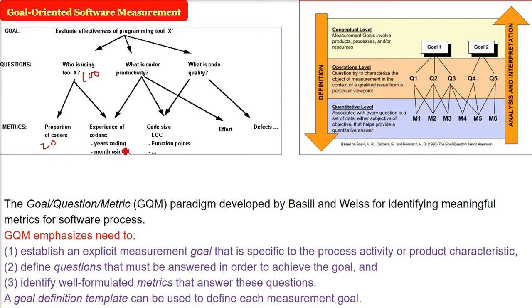Now, experience of the coders. Some of them may have five years of experience, some may have three years of experience. And the people who are not coding also can have experience. This is the metric: metric is coming from proportion of coders, the experience of coders.